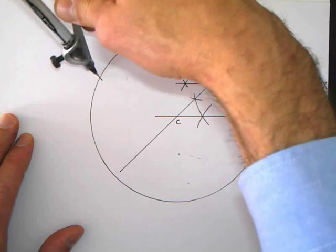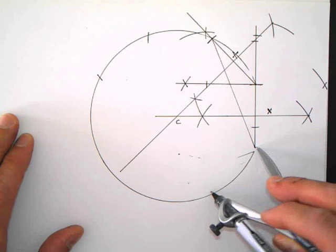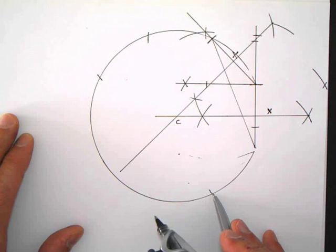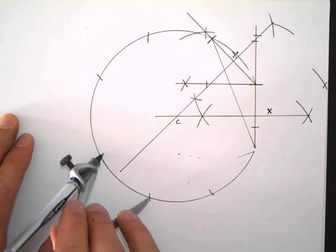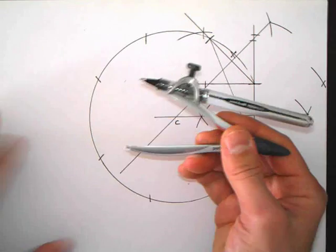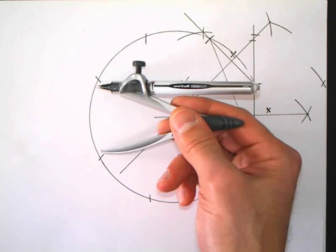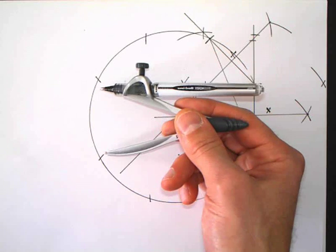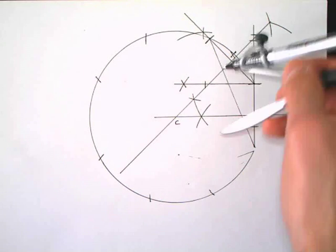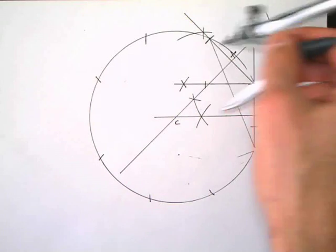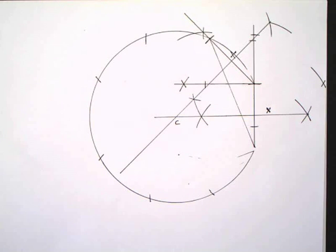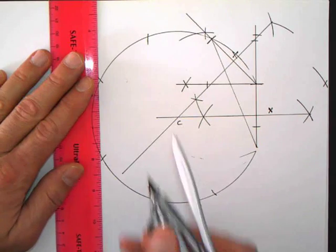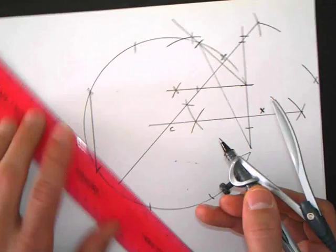Here is one perpendicular bisector, and here's another one — so this is the center of the circle. Now I just put my compass point at the center of the circle and move out to one of these vertices. Now I know the length of a side, so I'm just going to go and mark off sides. Now if I had done this really well, this last one would be the same size.